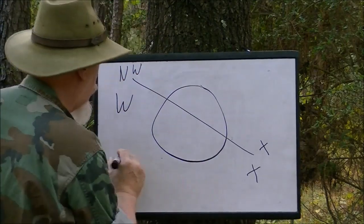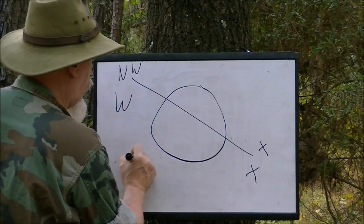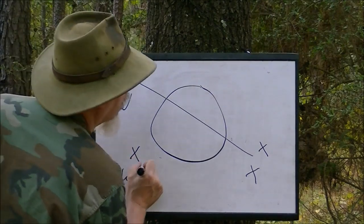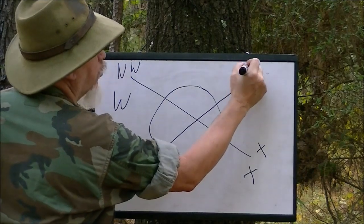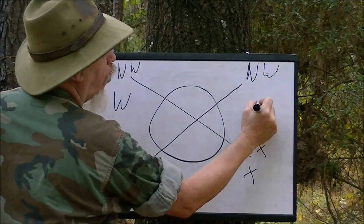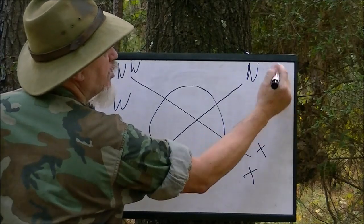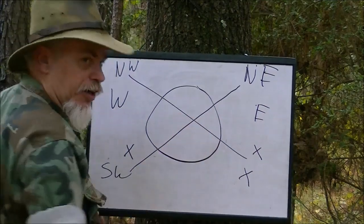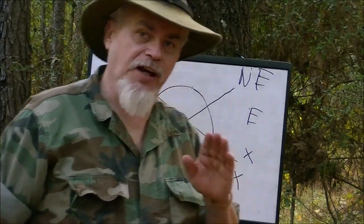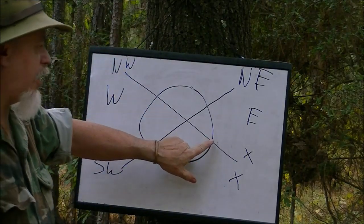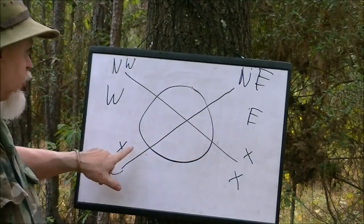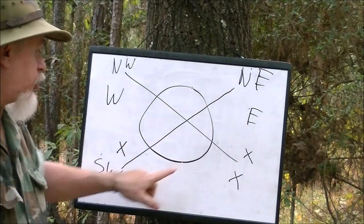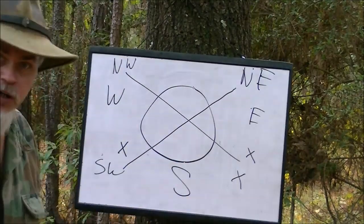At sundown, the sun is in the southwest to west, depending on the time of year, and it's casting a shadow to the northeast to east. Now, what that tells me is that in the morning, the sun is going to be hitting the southeastern side of the tree. At sundown, it's going to be hitting the southwestern side of the tree, and at around noon it should be hitting the southern side of the tree.